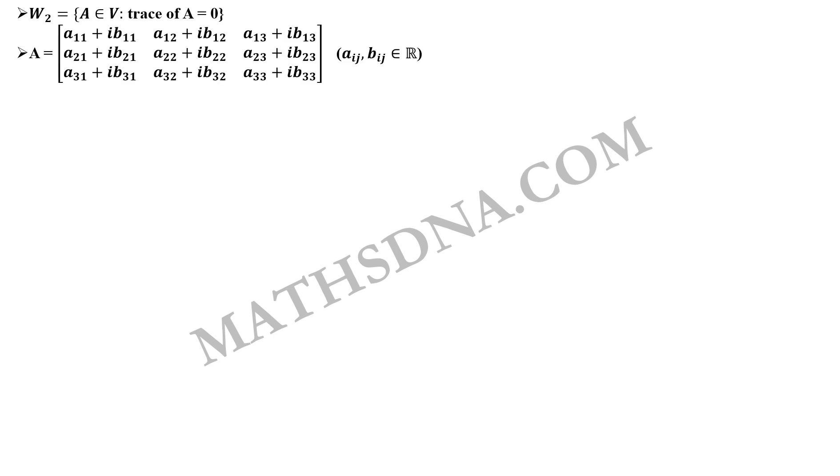Now, similarly we find W2. W2 is defined as A belongs to V such that trace of A equals to 0. We already have our A and now adding them all that is A11 plus A22 plus A33 should be equals to 0 which implies that any one element is dependent.